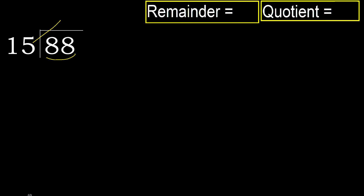15 multiplied by which number is nearest to 88 but not greater? 15 multiplied by 6 is 90, which is greater. 15 multiplied by 5 is 75, which is not greater.